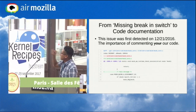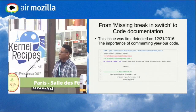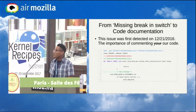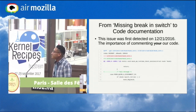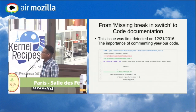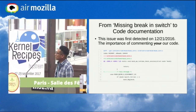This issue was first detected last year. There was a question from the audience: doesn't current GCC warn about fall-through if you don't put a comment there, to fix a warning? The response was that recent versions of GCC do warn about this.